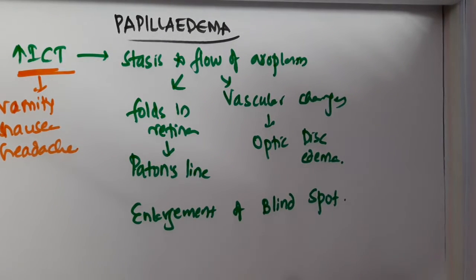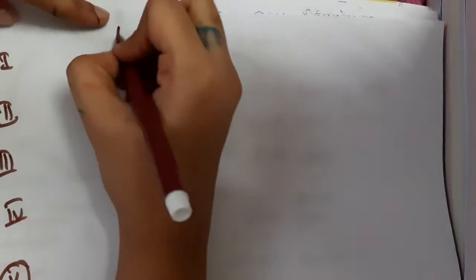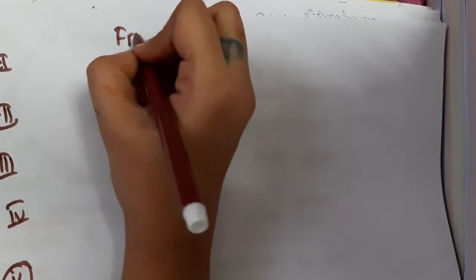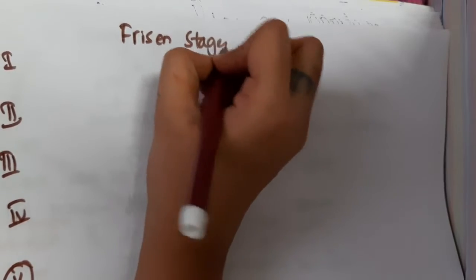One important thing is the grades. Papilledema grades are very important. We have five grades of papilledema. What is the name of this grading system? It is called the Frisson stages — the Frisson stages of papilledema.